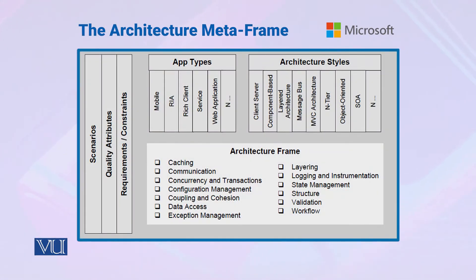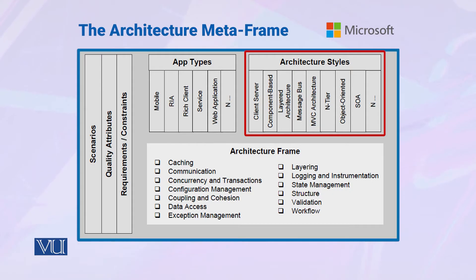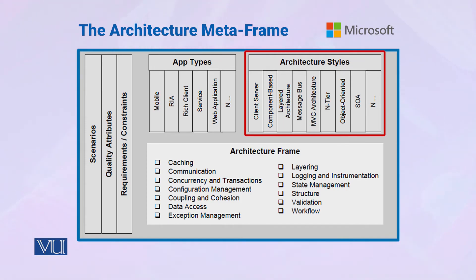The third thing is architectural styles, also called architectural patterns. There are many different styles of architectures: client-server architecture, layered architecture, object-oriented architecture, service-oriented architecture. What kind of architecture is this?